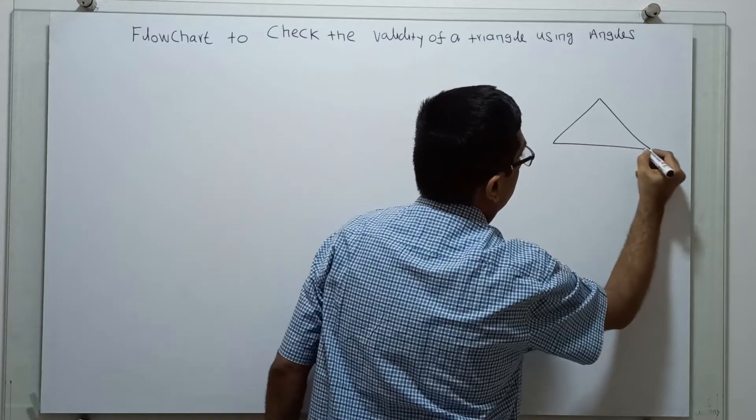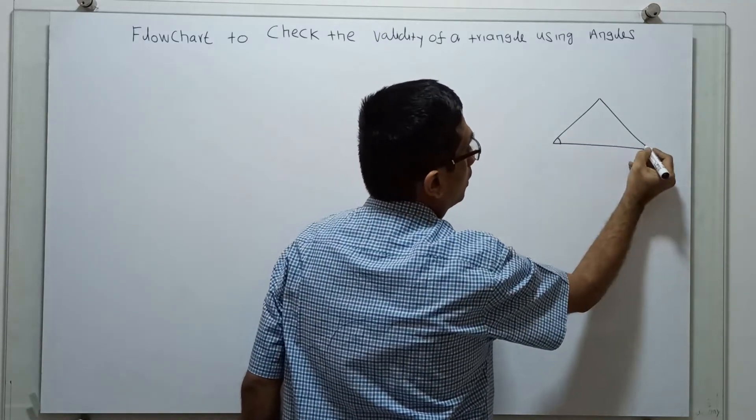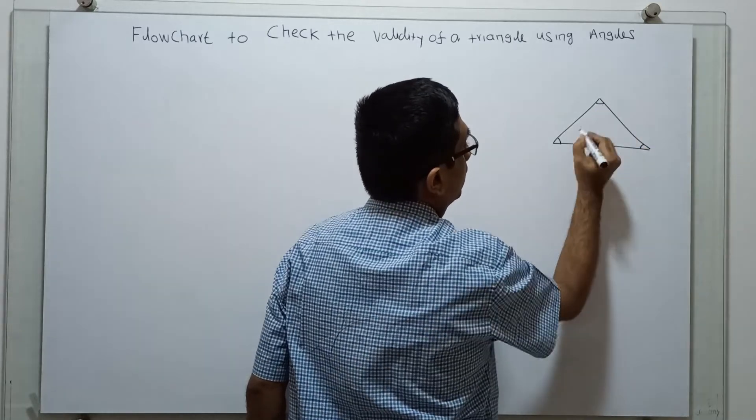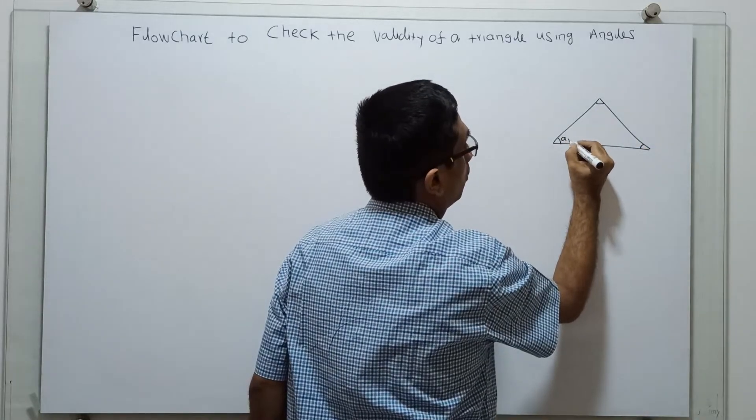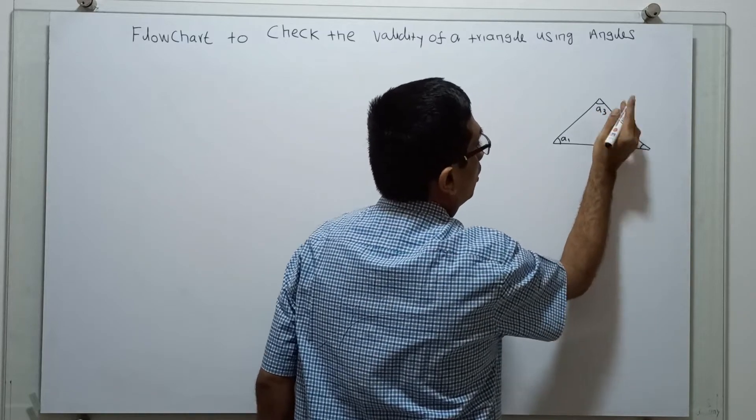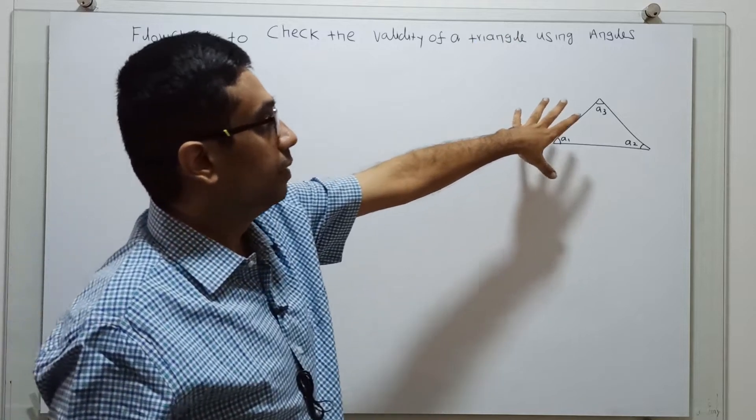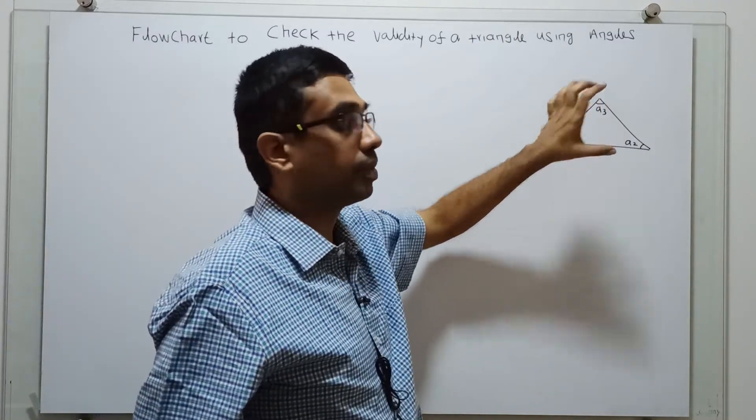In a given triangle, we have to check the three angles. We can say that it is a1, a2, and a3. To obtain the three angles as input, we are going to check whether the triangle is possible or not possible.